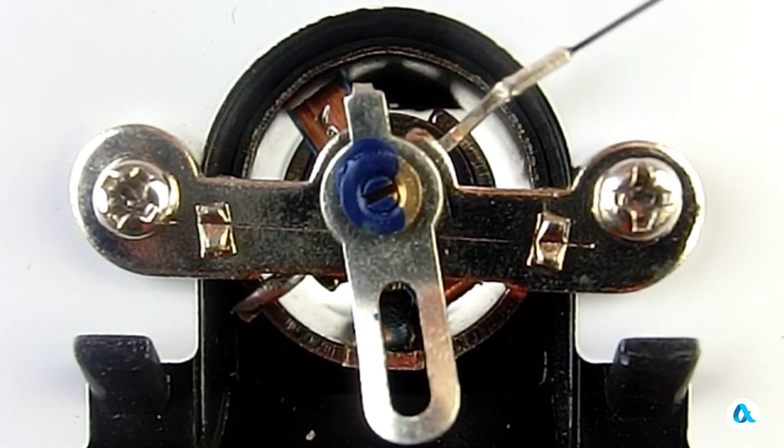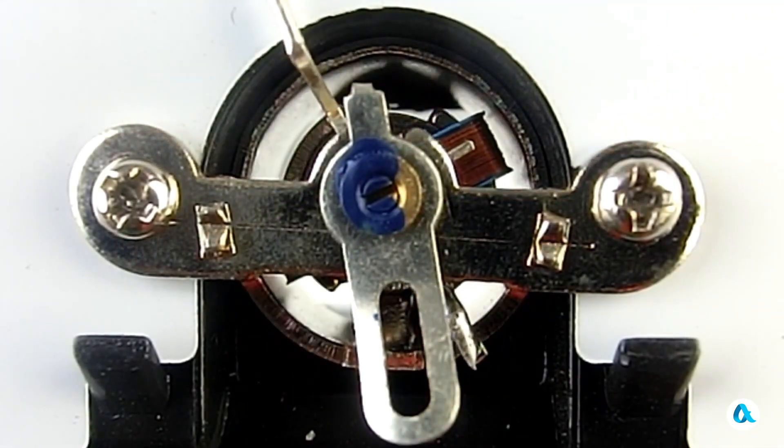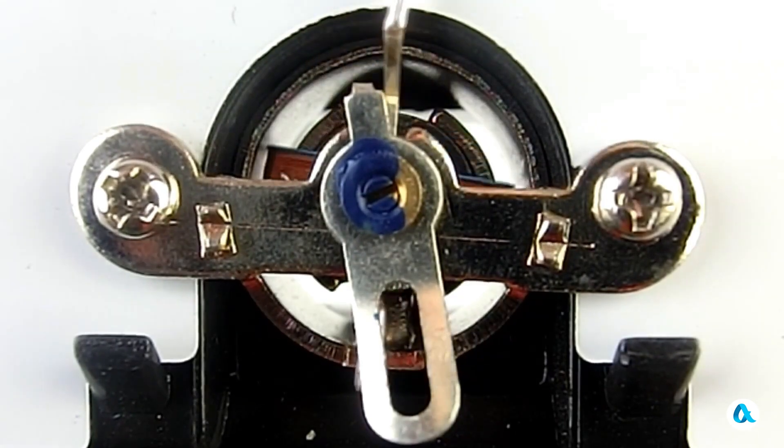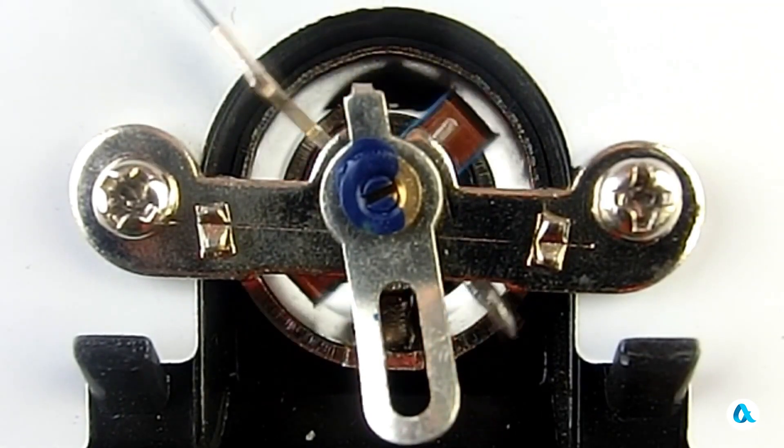When electric current flows through this coil, it rotates in the magnetic field created by a permanent magnet. And the angle of the needle's rotation is proportional to the current flowing through the coil.